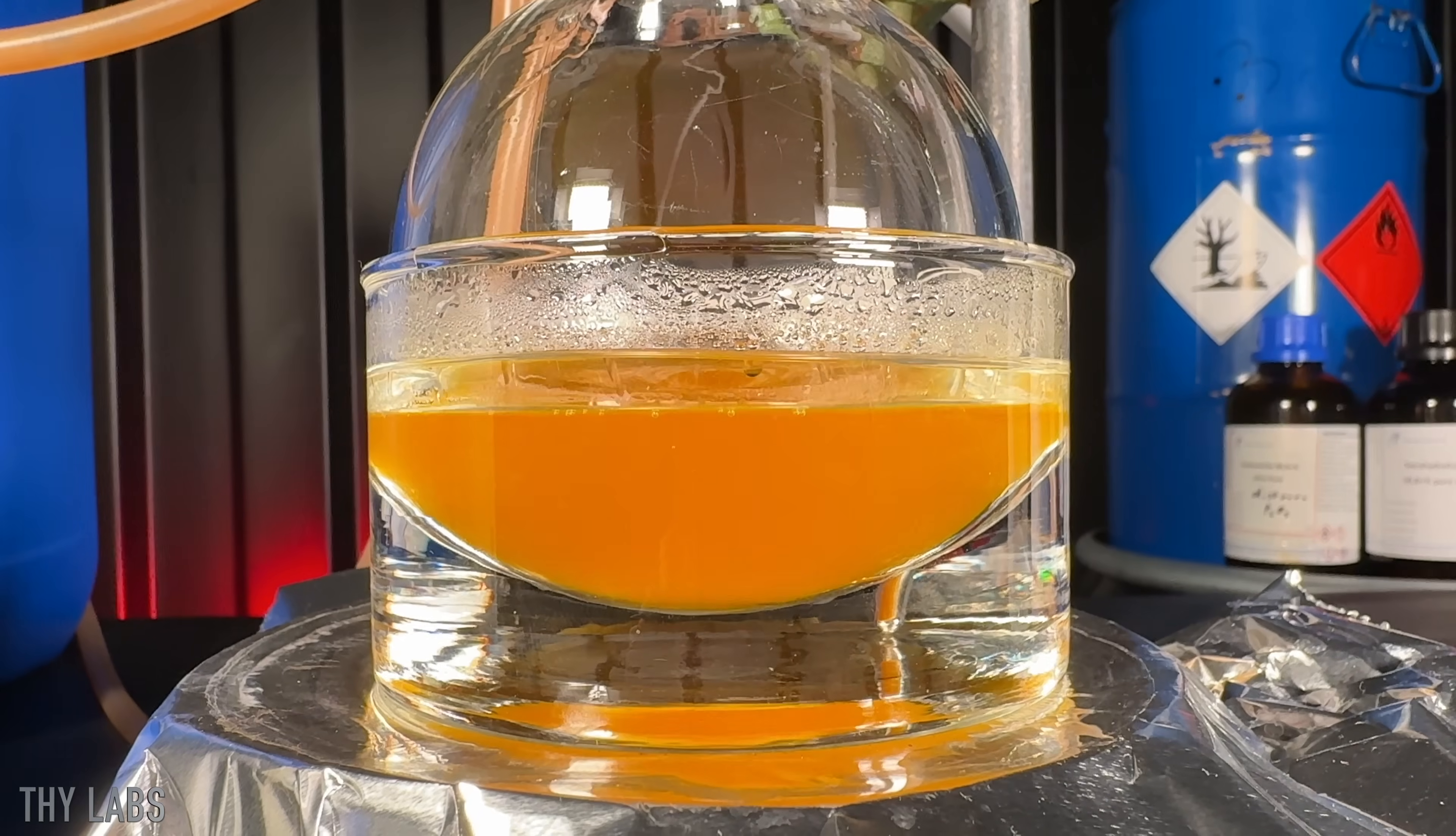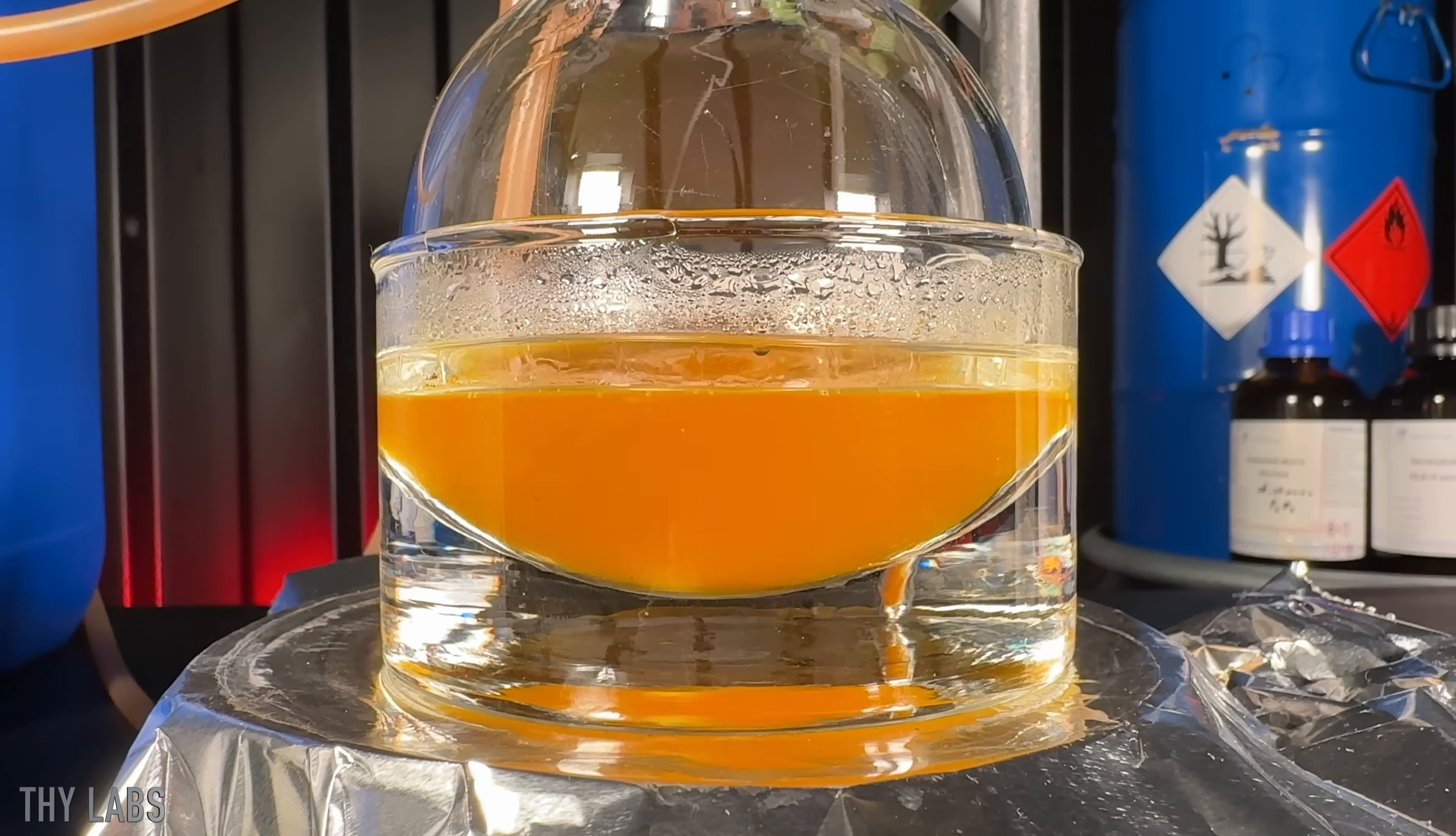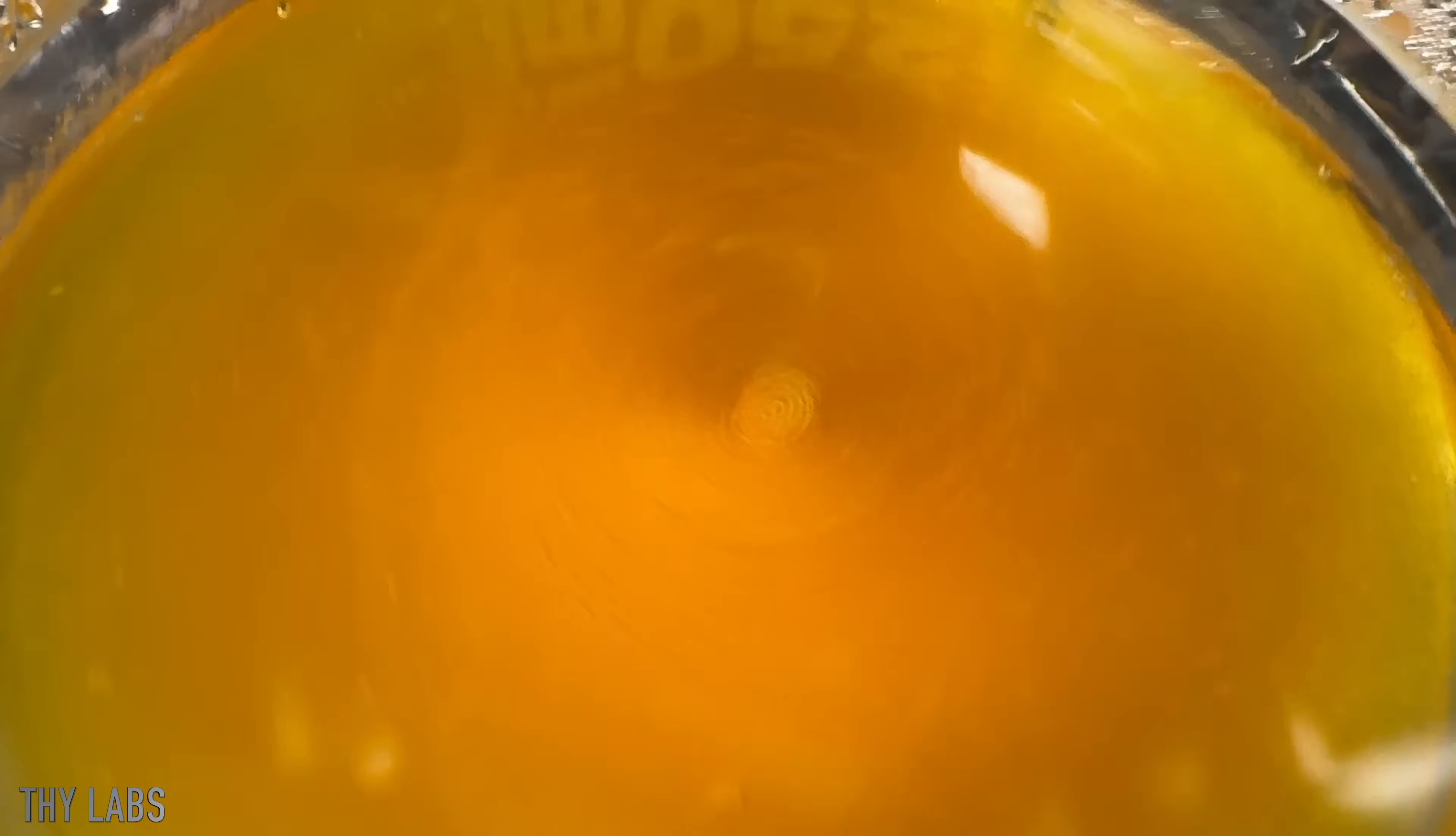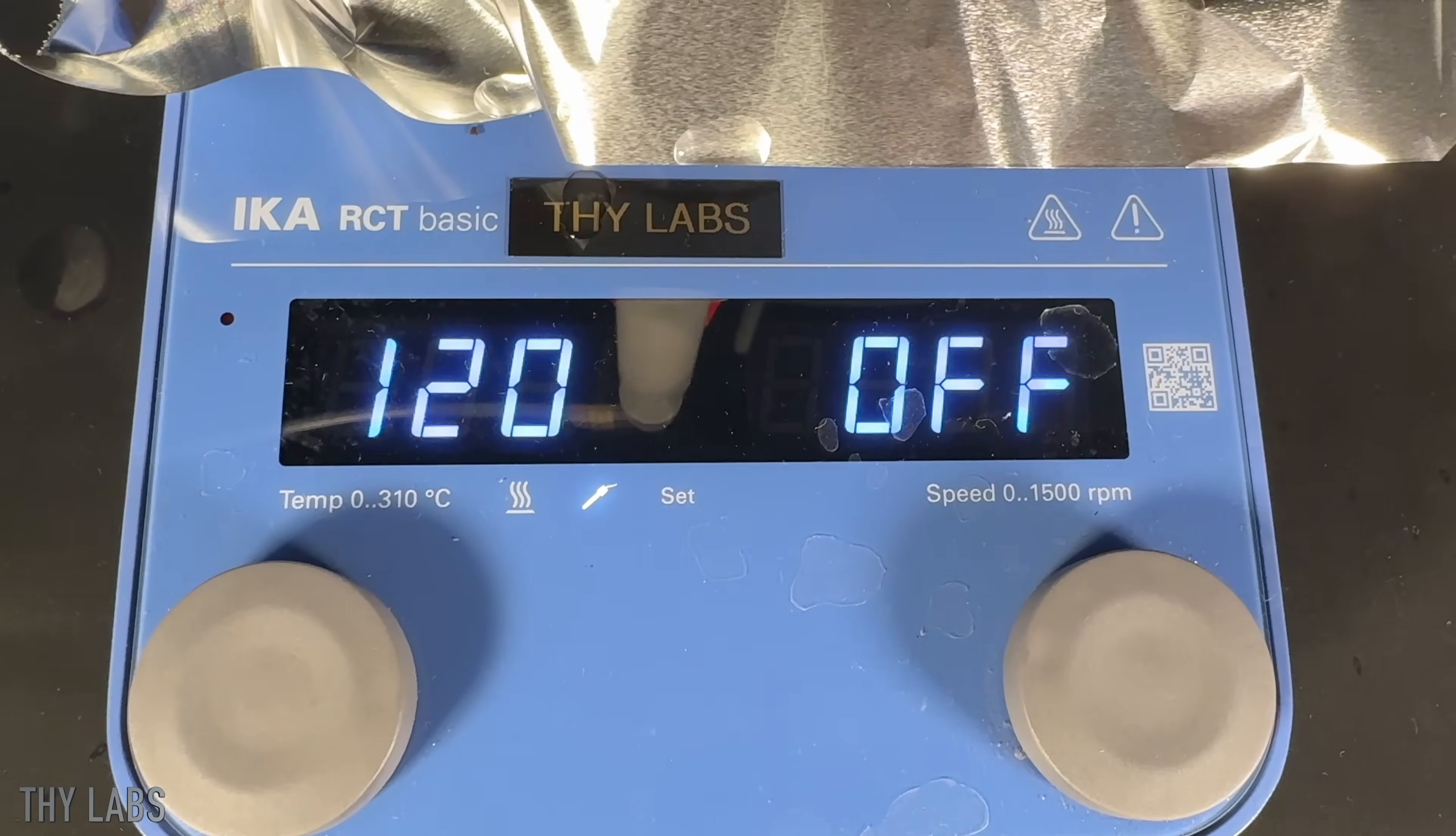When I turn off the light and show you the laser beam, it is even more pronounced. Once finished, the contents of the flask looked like this. It wasn't clear anymore and it was even more orange. I turned off heating and stirring and waited for it to cool down before I could do the next step.